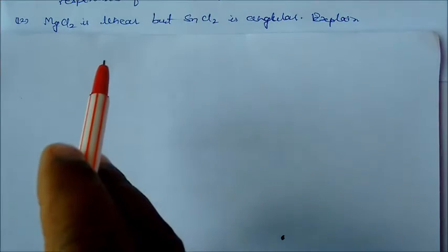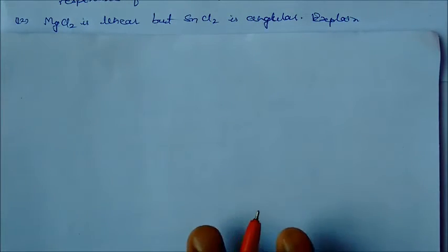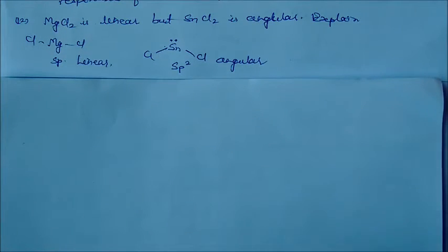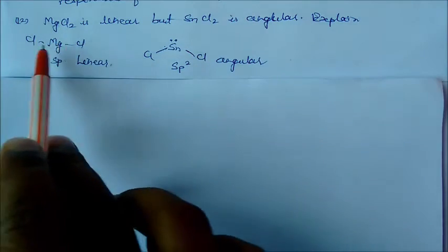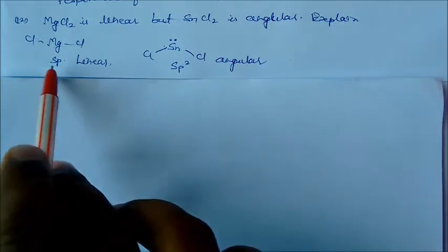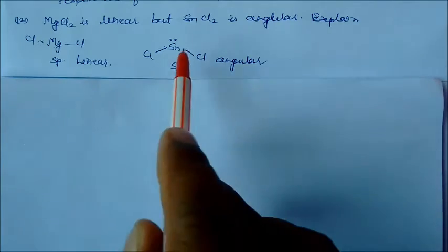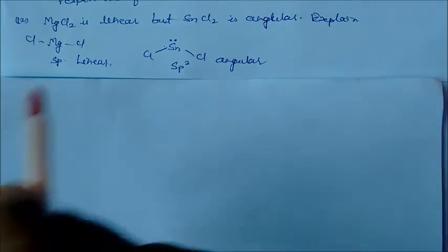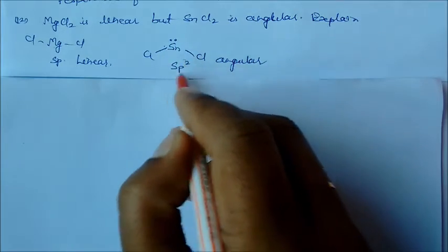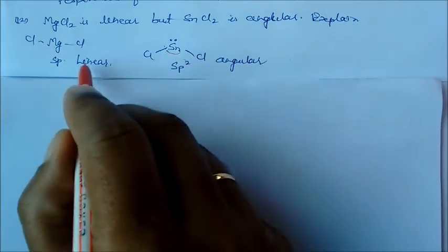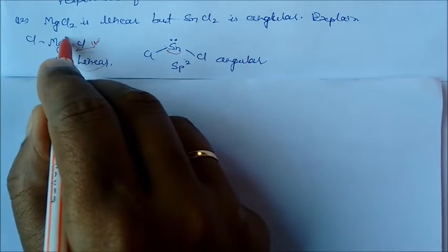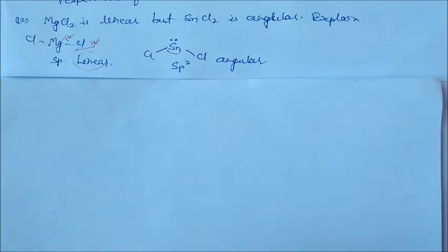MgCl2 is linear but SnCl2 is angular. We basically explain in terms of hybridization concept. If you see MgCl2, it has two valence electrons, so we get sp linear molecule. But tin has four electrons, two electrons bonded with chlorine, so it is acquiring sp2 hybridization. This will make an angle but this will make a linear, that is the angle is 180 degrees. This is angular and this is linear.